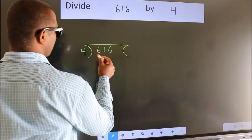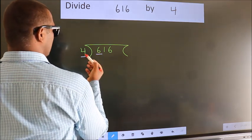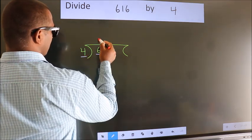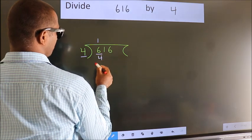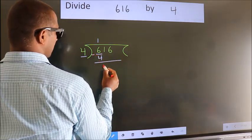Here we have 6, here 4. A number close to 6 in 4 table is 4 ones 4. Now we should subtract. We get 2.